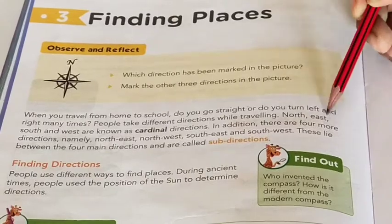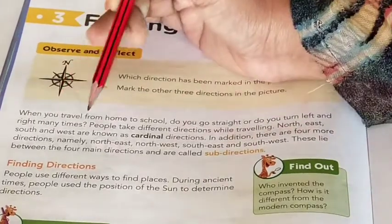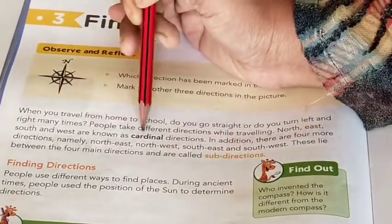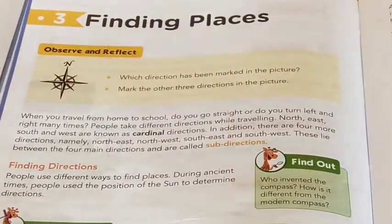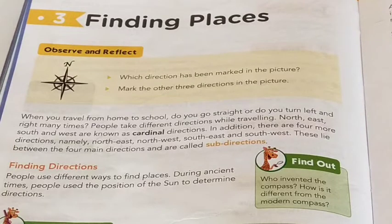North, East, South, and West are known as cardinal directions. North, East, South, and West — inhe jaante hain cardinal directions ke roop mein.